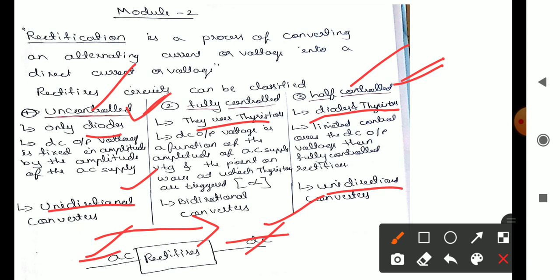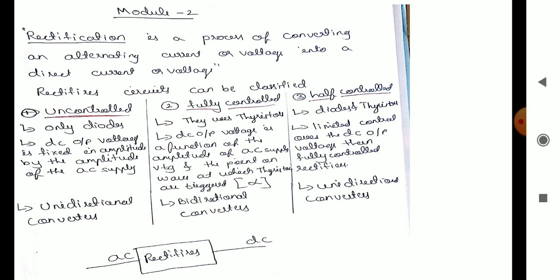If an arrangement is made such that power can flow from AC to DC as well as DC to AC, two-way power flow is possible. That type of converter is called a bidirectional converter. Fully controlled rectifiers using thyristors are bidirectional; the output can be controlled by varying the firing angle. In a half controlled rectifier, a diode is also present, so it remains a unidirectional converter.